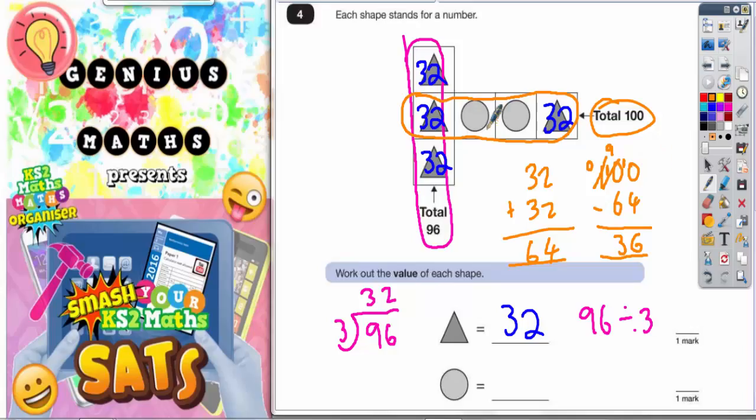If you take your 64 off the total of this row, which is 100, you're left with 36. But these circles aren't 36 each. The two circles together must be worth 36.